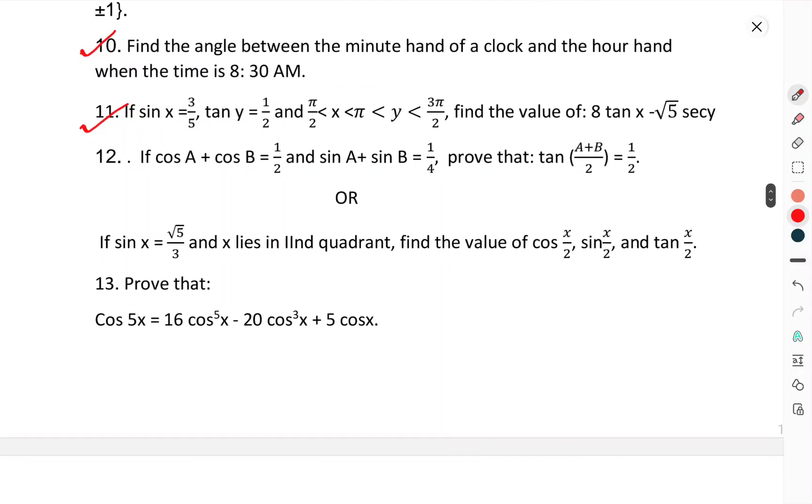Question 11: If sin x = 3/5, tan y = 1/2, and π/2 < x < π and π < y < 3π/2, find the value of 8 tan x - √5 sec y.